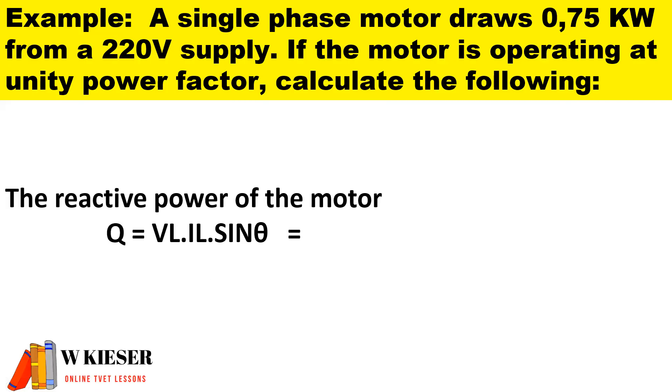The reactive power of the motor: the symbol is Q. It is line voltage multiplied by line current multiplied by sine theta. And because the phase angle is 0 degrees we have 0 heat wasted. So you can see we have 0 volt amps reactive.